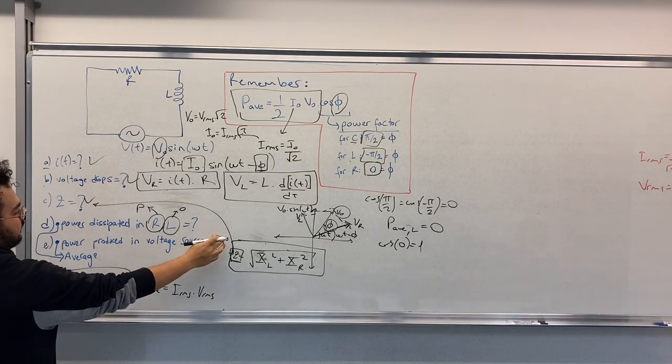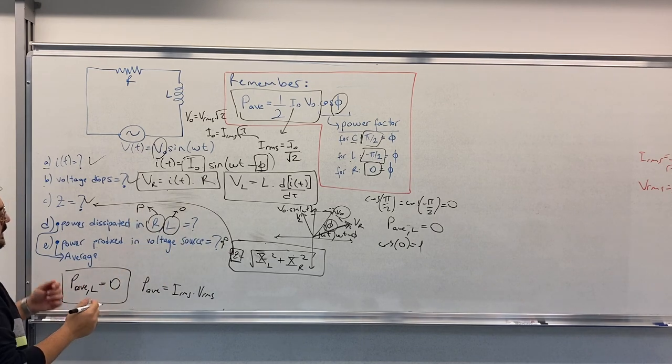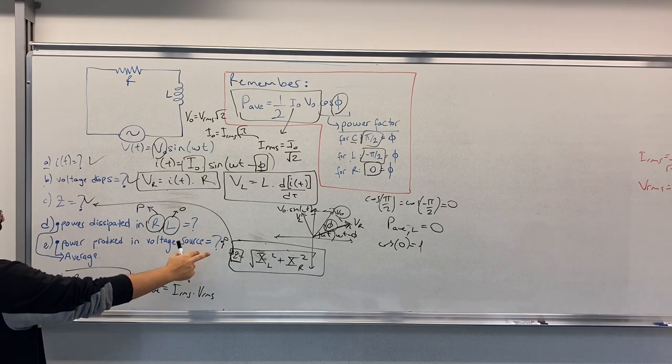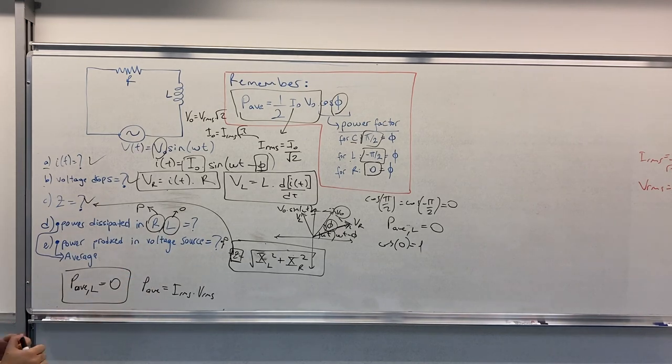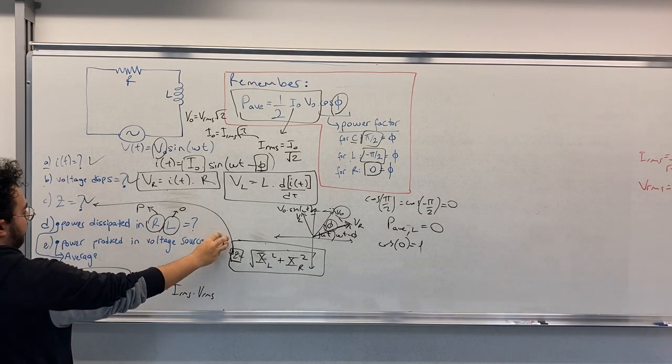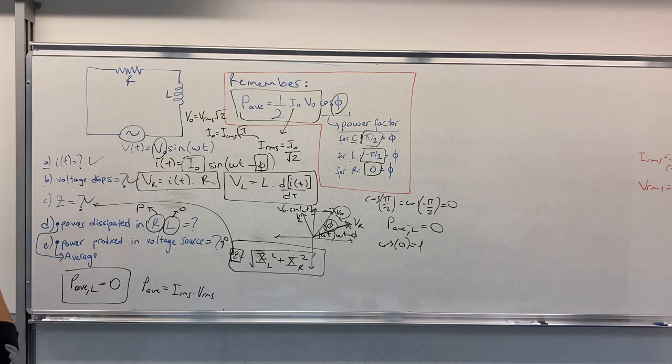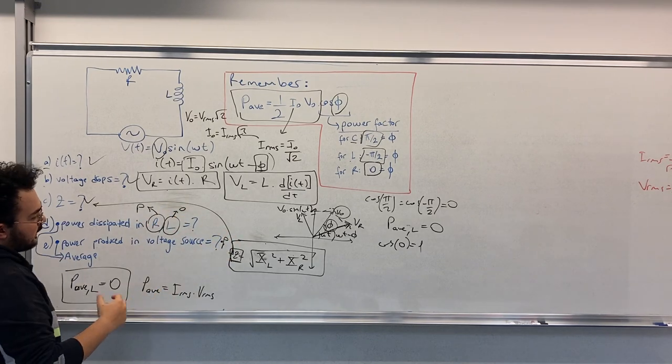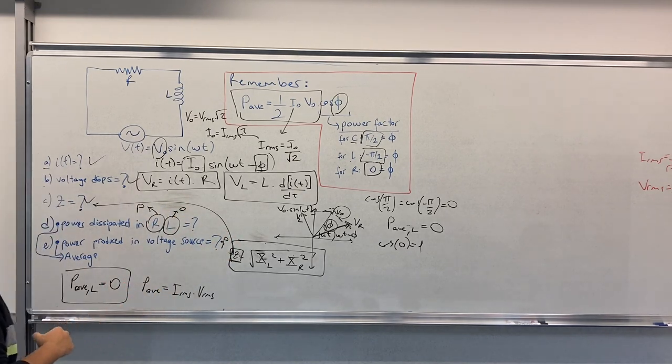But remember this is the power dissipated, this is the power produced, so the minus signs might just confuse you. Just keep in mind that this is the dissipated, this is the produced, so you can say that they should cancel each other.